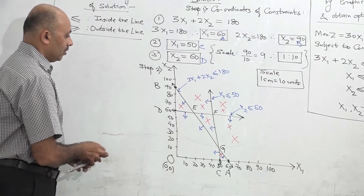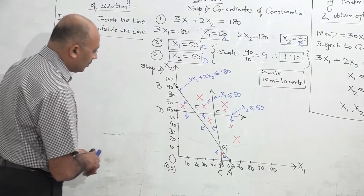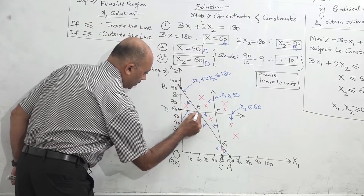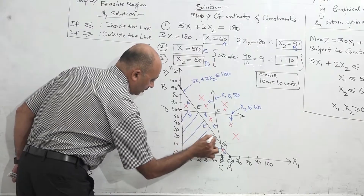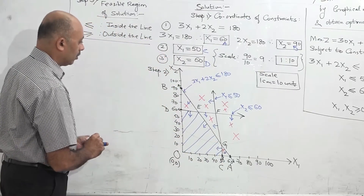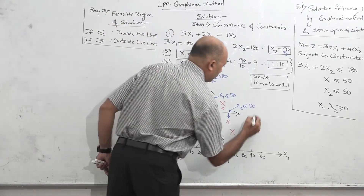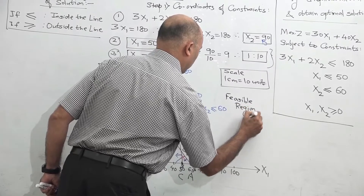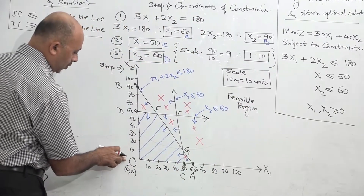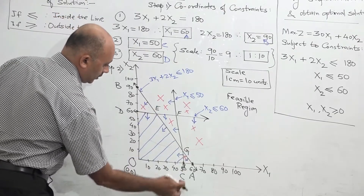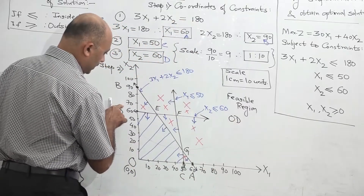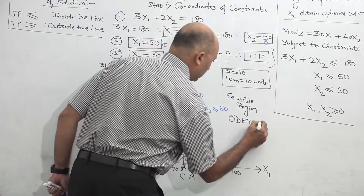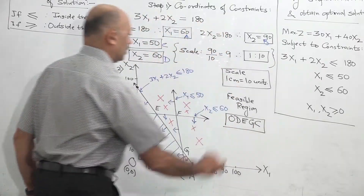When you do all cancellations, whatever remains in the end, that is our region. You can see parts 1, 2, 3, 4, 5, 6 are all cancelled. So what remains is only this part — this is our region of solution. This is what we call the feasible region. On the graph paper, write 'feasible region'. It starts from O, then goes to D, E, G, and then C. This is our region of solution.